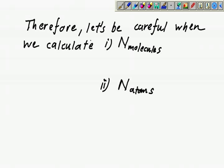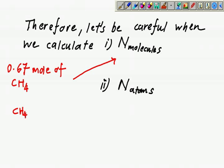Now let's be careful when we calculate number of molecules and number of atoms. Example calculation: 0.67 mole of CH4. They want you to find the total number of molecules. When they say molecule, they mean just one unit. You don't have to worry about how many atoms within the capsule.